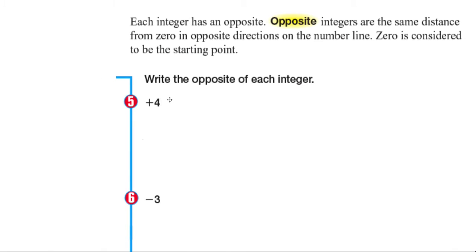Let's take a look at what an opposite is. Each integer has an opposite. And remember the definition that you wrote down. Opposite integers are the same distance from 0 in opposite directions on the number line. 0 is considered to be the starting point of our number line. So we want to find the opposite of each integer.